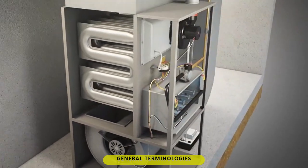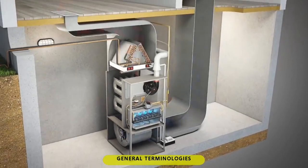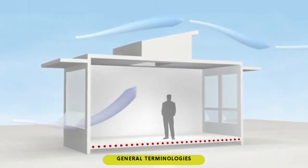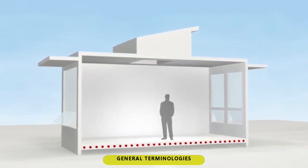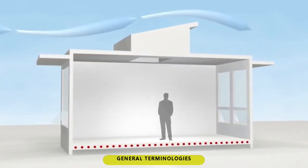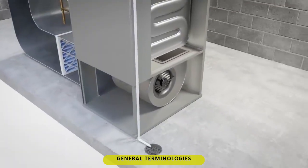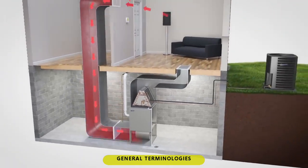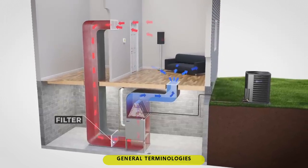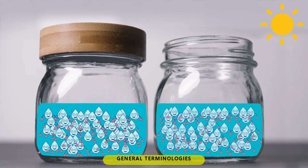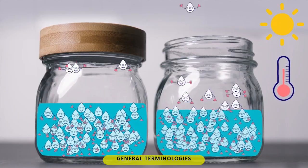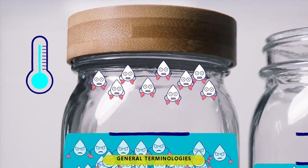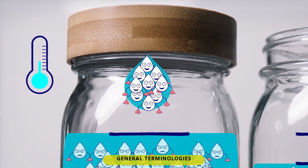Heating system: uses thermal energy to produce and maintain mild indoor air temperature. Ventilation system: regulates air circulation to improve air temperature and humidity. Air conditioning system: controls the temperature, humidity, and purity of air in a specific indoor space. Evaporation: the process by which liquid turns into gas. Condensation: the process by which gas turns into liquid.